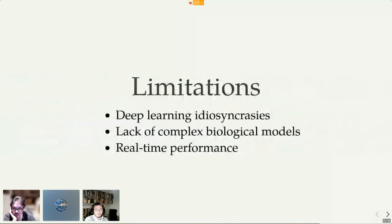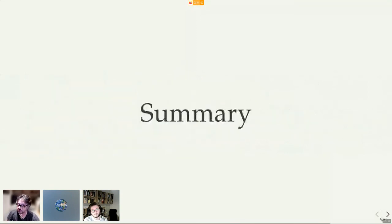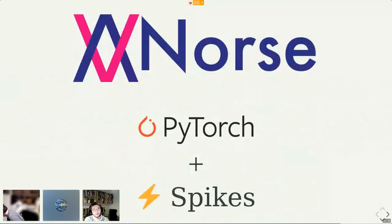I really want to touch on some limitations in this approach. Of course we have to suffer these deep learning idiosyncrasies. I mentioned tensors before, which is the basic building block. Reasonably quickly we're running out of time, but yeah, of course. So another limitation is the lack of complex biology models. We have a lot of work to do to catch up with other libraries. And finally, there's real-time performance. Of course you want to do this in real time.